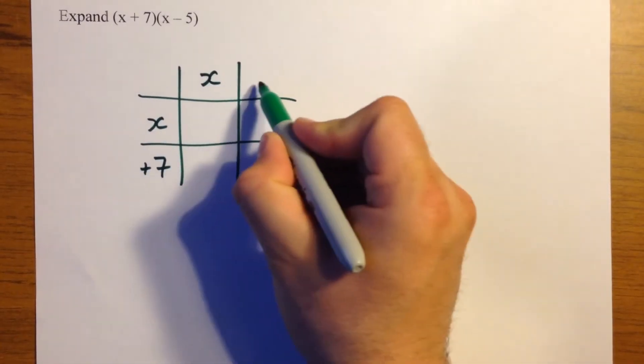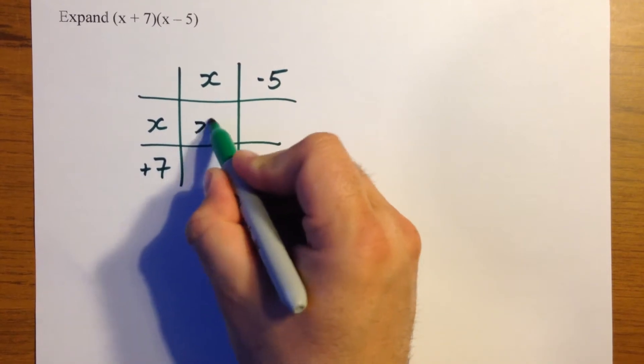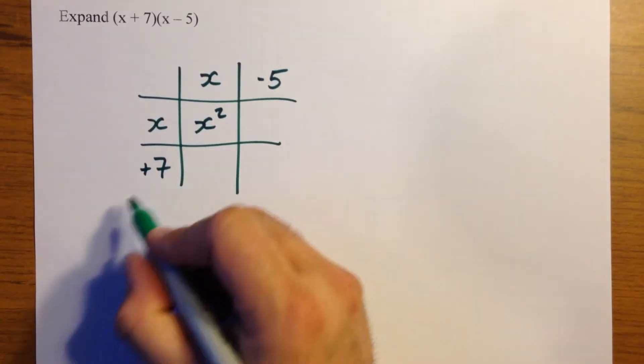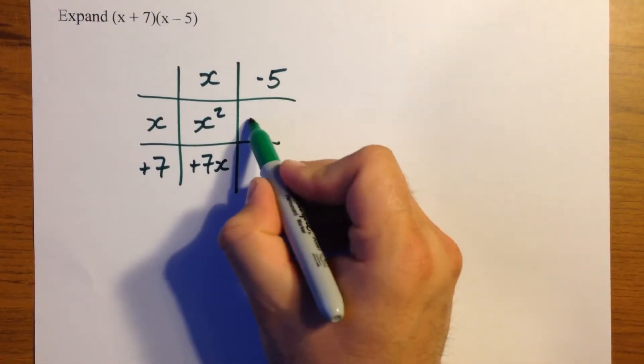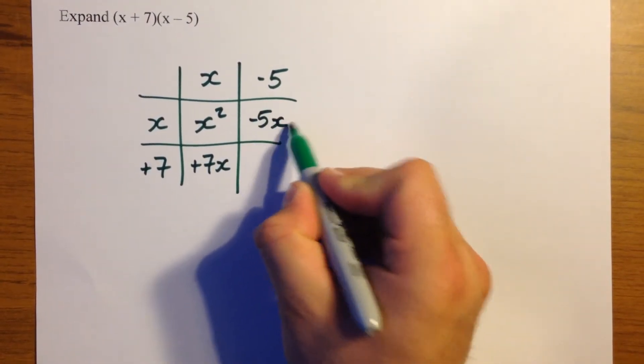second bracket across the top, x multiplied by x is x squared, x multiplied by positive 7 is plus 7x, x multiplied by negative 5 is negative 5x,